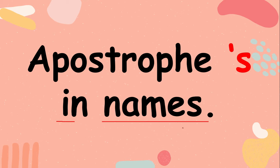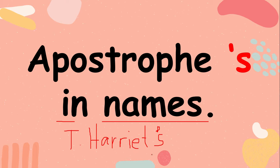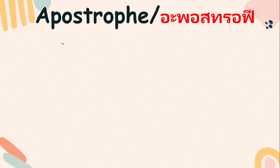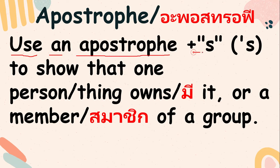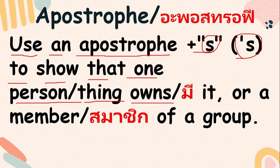Apostrophe 's' in names. So if, for example, Teacher Harriet — we are going to learn the apostrophe in my name. What is the use of apostrophe in our name or in your name? Use an apostrophe 's' to show that one person or thing owns it, or is a member of a group.